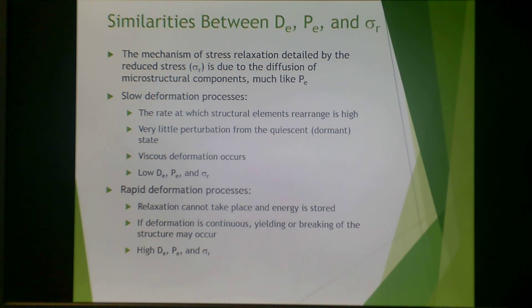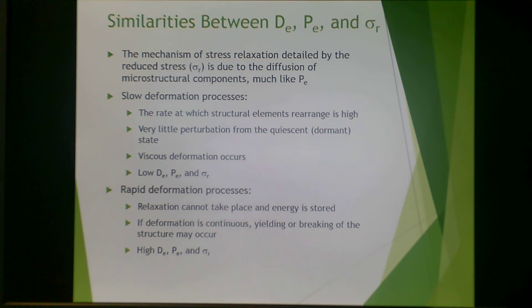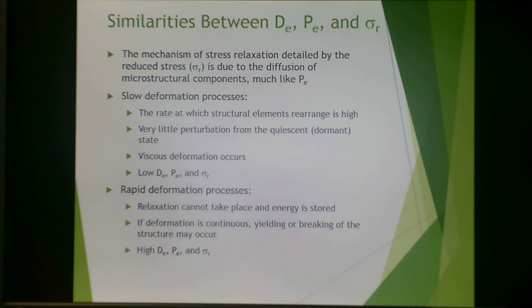The mechanism of stress relaxation described by reduced stress is due to diffusion of microstructural components, much like the Péclet number. For a slow deformation process, structural elements rearrange rapidly, causing little perturbation from the quiescent state — viscous deformation occurs, corresponding to low Deborah number, Péclet number, or reduced stress. For a rapid deformation process, relaxation cannot take place and energy is stored; if deformation is continuous, yielding or breaking of the structure may occur, corresponding to high Deborah number, Péclet number, or reduced stress.